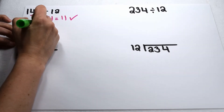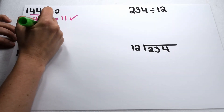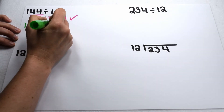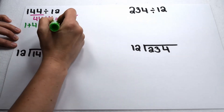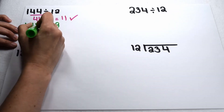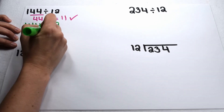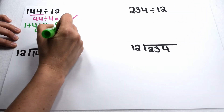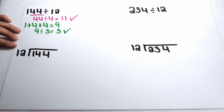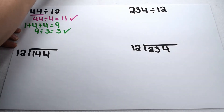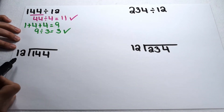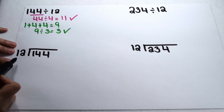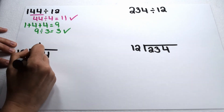Next, we check to see if 144 is divisible by 3. If it's divisible by 3, then the sum of its digits will be divisible by 3. So 1 plus 4 is 5, and 5 plus 4 is 9. 9 divided by 3 gives me 3. So this tells me 144 is divisible by both 4 and by 3.